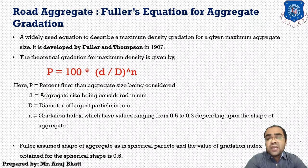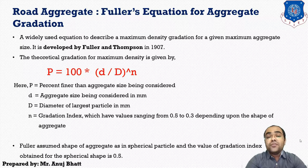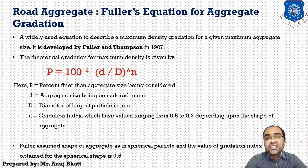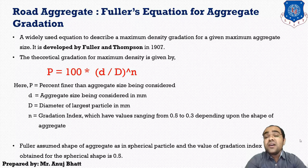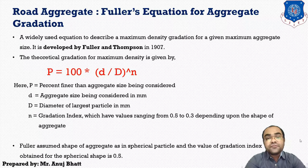Fuller assumed the shape of aggregate as a spherical particle. That is a limitation of this equation — it is only applicable for spherical particles. The value of the gradation index n obtained for the spherical shape was assumed to be 0.5. So these two are the limitations of Fuller's equation: the shape is assumed spherical, and the gradation index n equals 0.5.